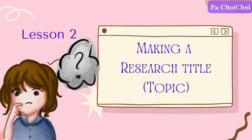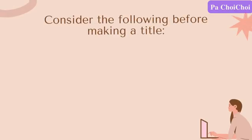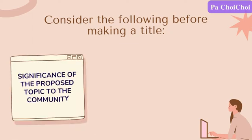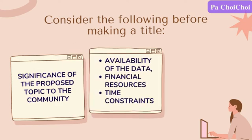Method number 2: making a research title. Before making a title, we must consider the significance of the proposed topic to the community — whether it proposes a solution to a relevant problem, discovers something new, or spreads awareness. As long as the purpose has any benefit to society, it will be a good topic. We must also be realistic and considerate, especially regarding the availability of data, financial resources, and time constraints.